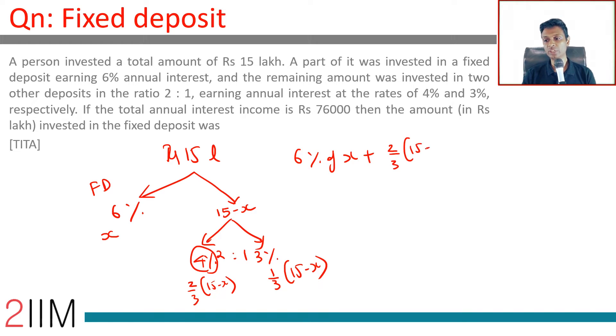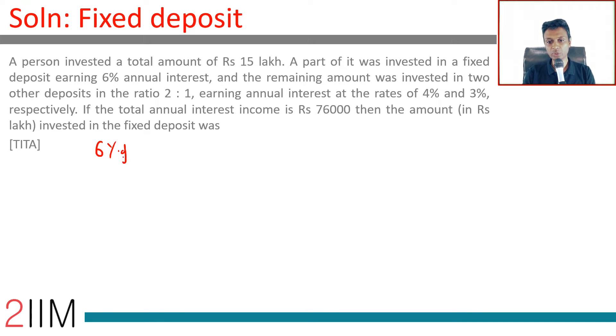We get: 6% of X plus 2/3 of (15-X) times 4% plus 1/3 of (15-X) times 3% equals 76,000. But remember this is in lakhs, so that's 0.76 lakhs.